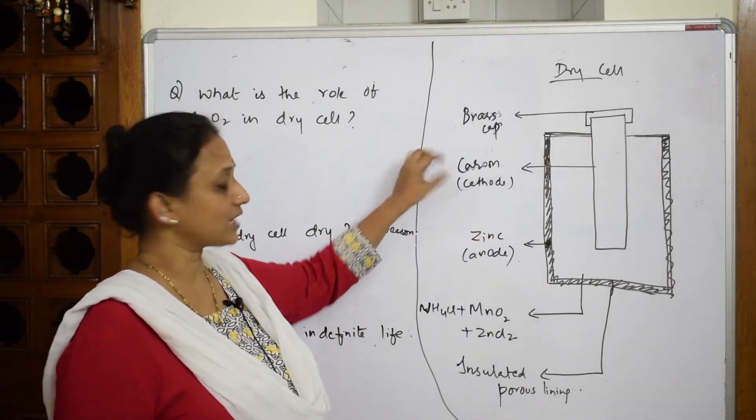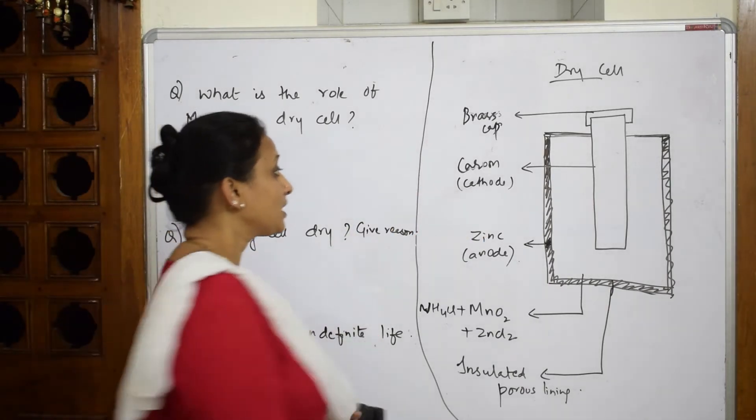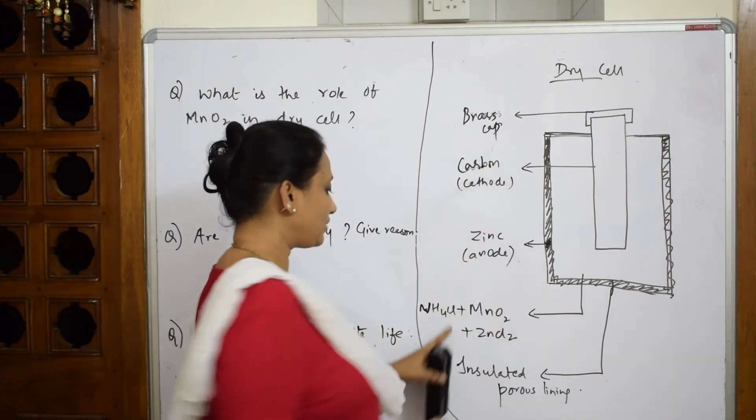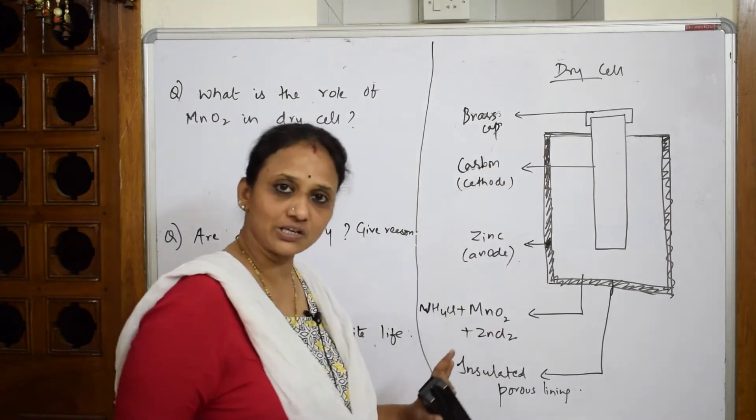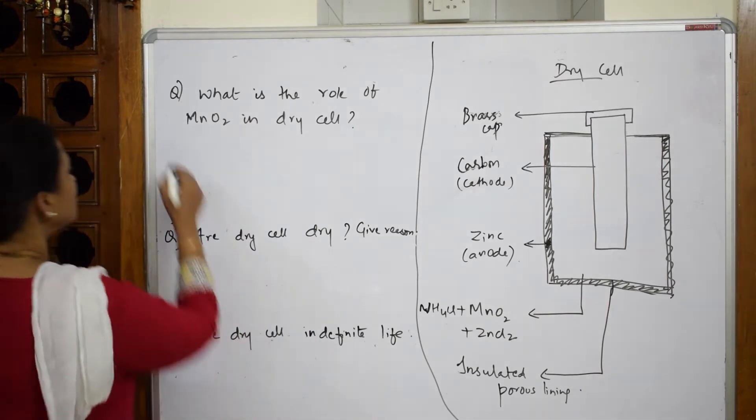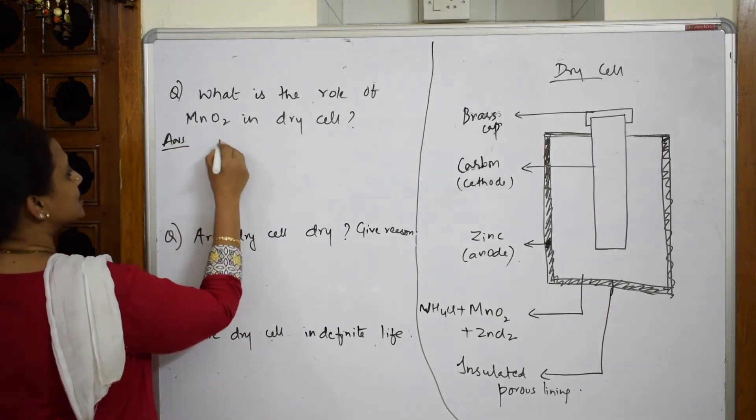an anode, we have seen the role of carbon as a cathode, and we have also seen the role of electrolytic paste that is ammonium chloride and zinc chloride. Now basically MnO2, if I have to write it, acts as